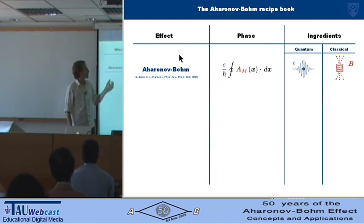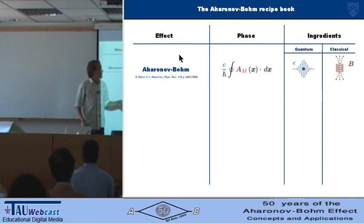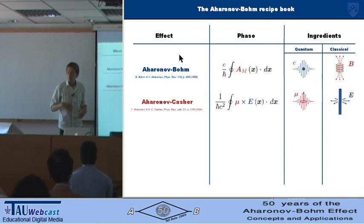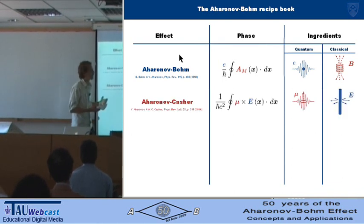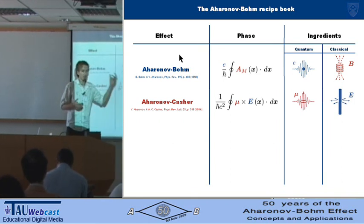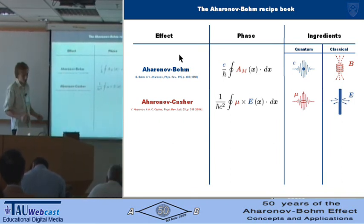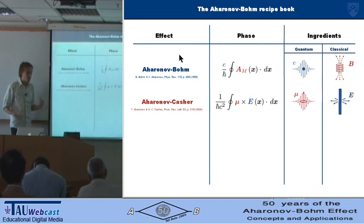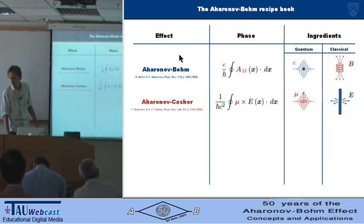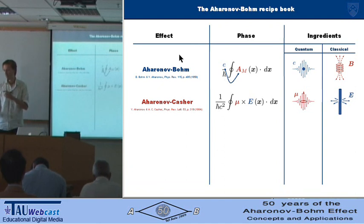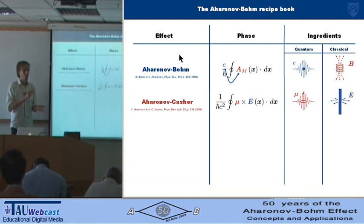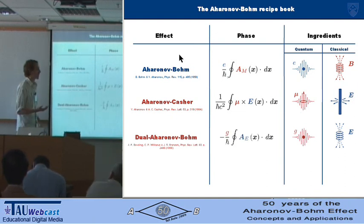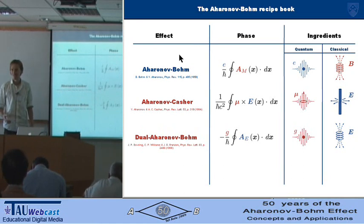We might ionize the molecule and then try and observe the interference around some enclosed flux—the usual Aharonov-Bohm effect. It might have a magnetic moment and we might interfere it around a line of electric charge and try and observe the Aharonov-Casher effect. There are the dual effects as well. One dual Aharonov-Bohm effect involves swapping electric and magnetic properties. The first one is where you have a magnetic charge around an electric flux, but that's not too useful—there are not many magnetic charges, certainly not in big molecules.